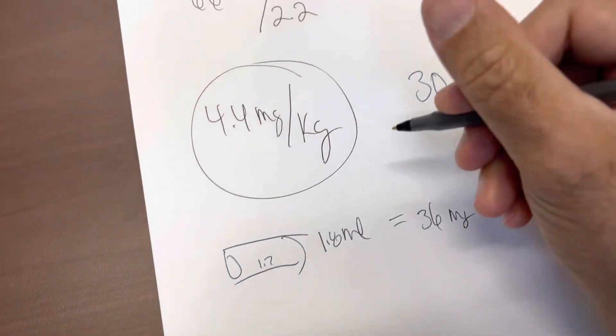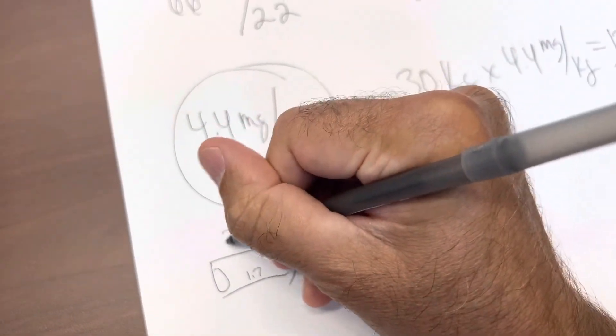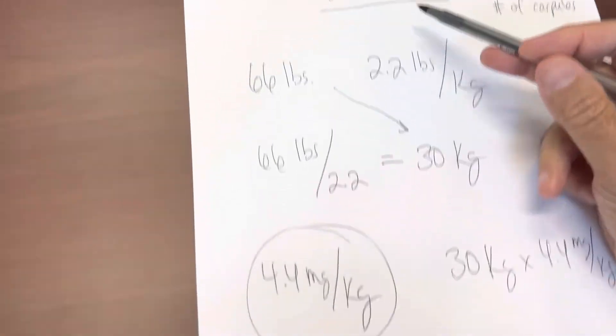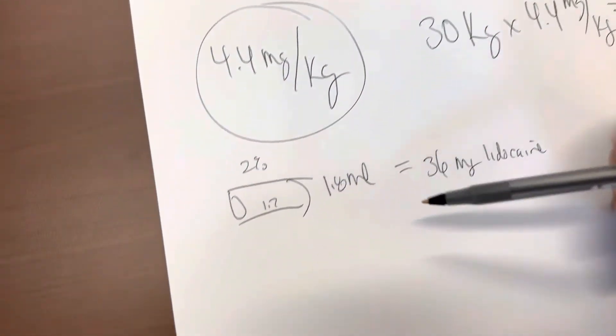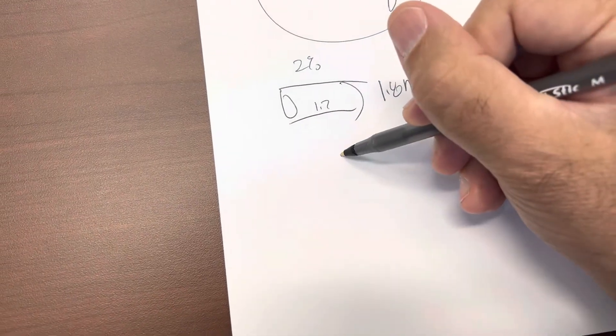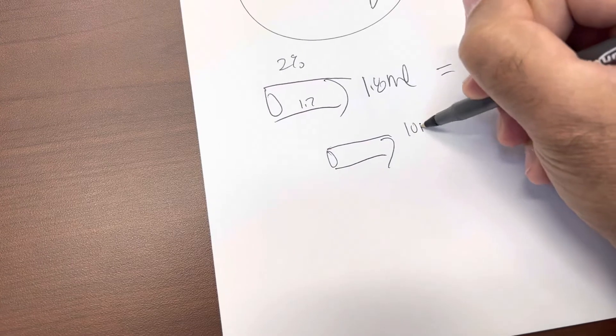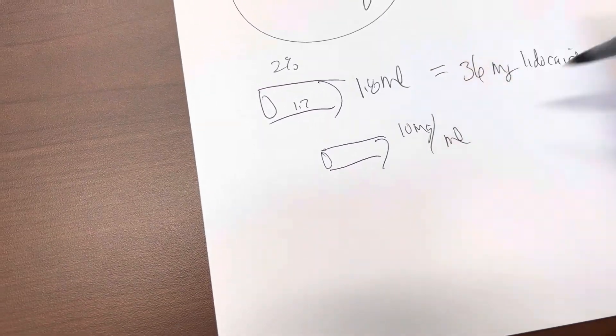Now, how do we know that? Well, this is a 2% solution, right? 2% lidocaine is what we're working with in dentistry. And we know that in a 1% solution, there's 10 milligrams per milliliter.